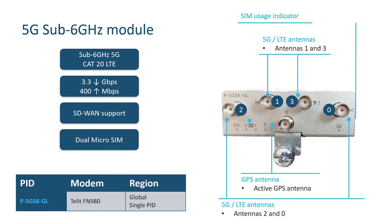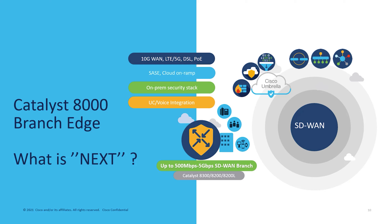Next, the 5G sub-6 GHz pluggable module enables high-speed cloud connectivity for SD-WAN transport and VPON DIA use cases. It supports 3.3 Gbps download and 400 Mbps upload, which provides three times the performance of CAT18 LTE standards. It supports dual micro-SIM, which can work in active standby mode with four antenna connectors. More importantly, we offer single PIDs to support globally across all regions.